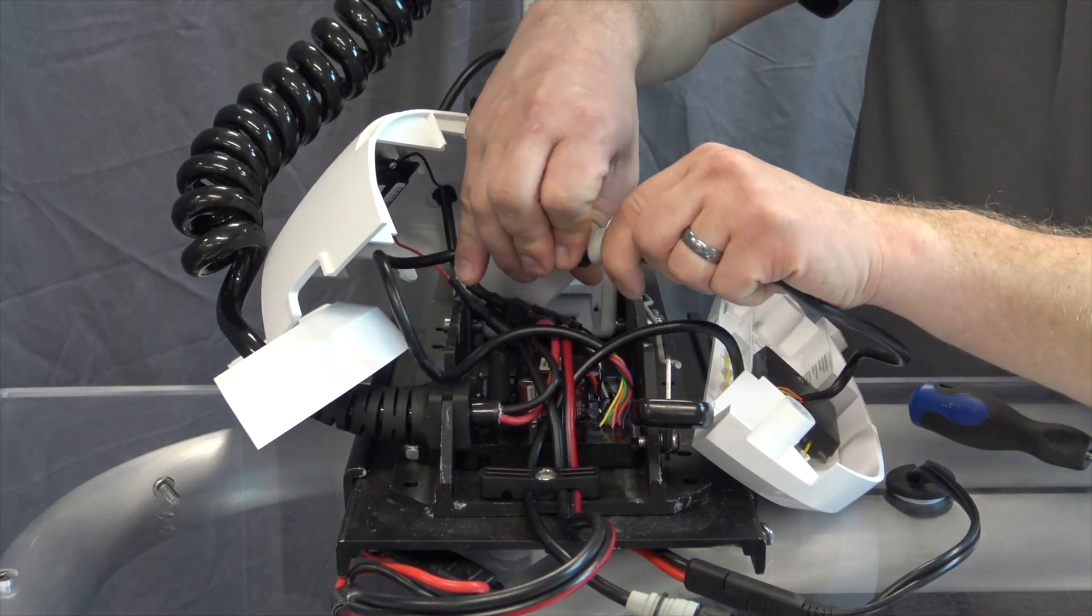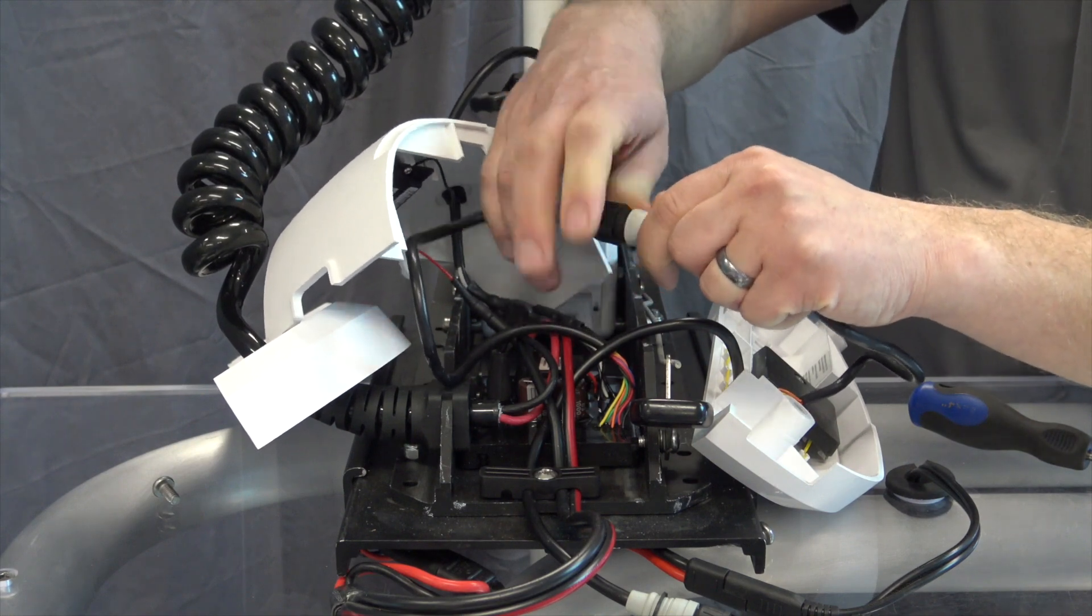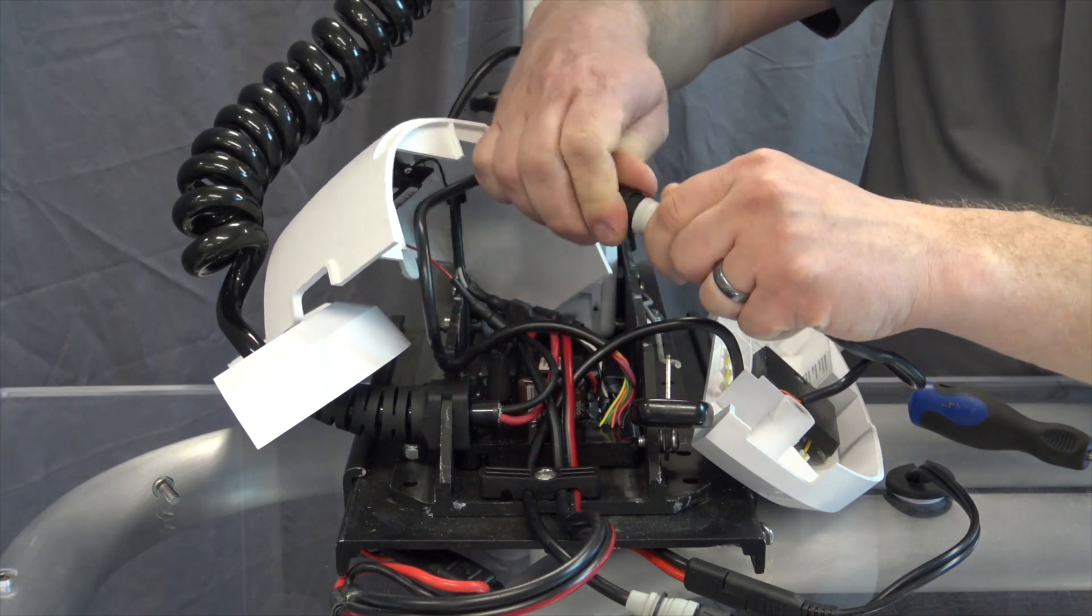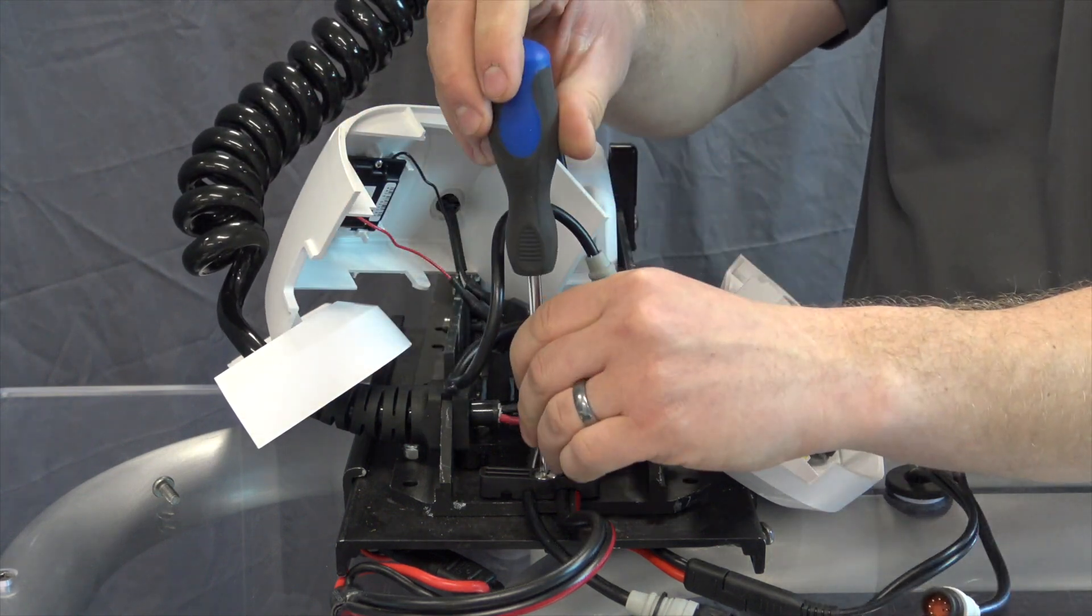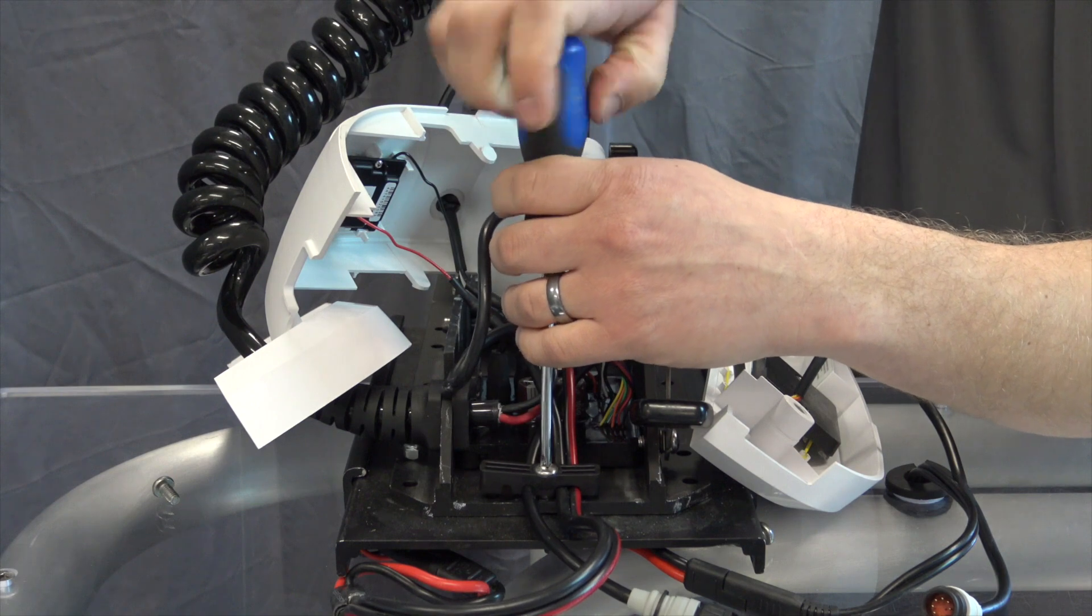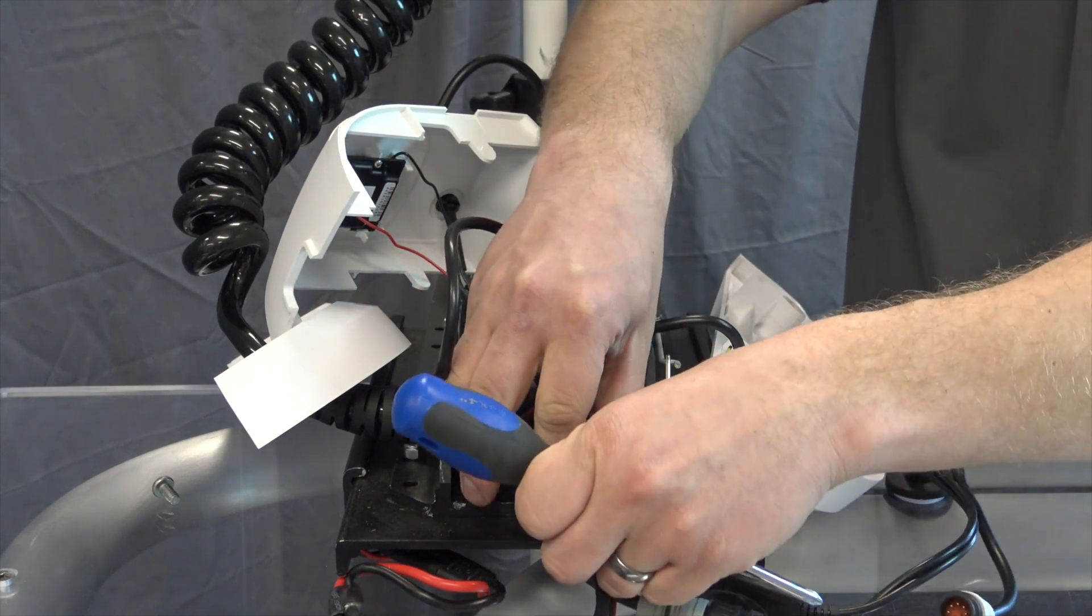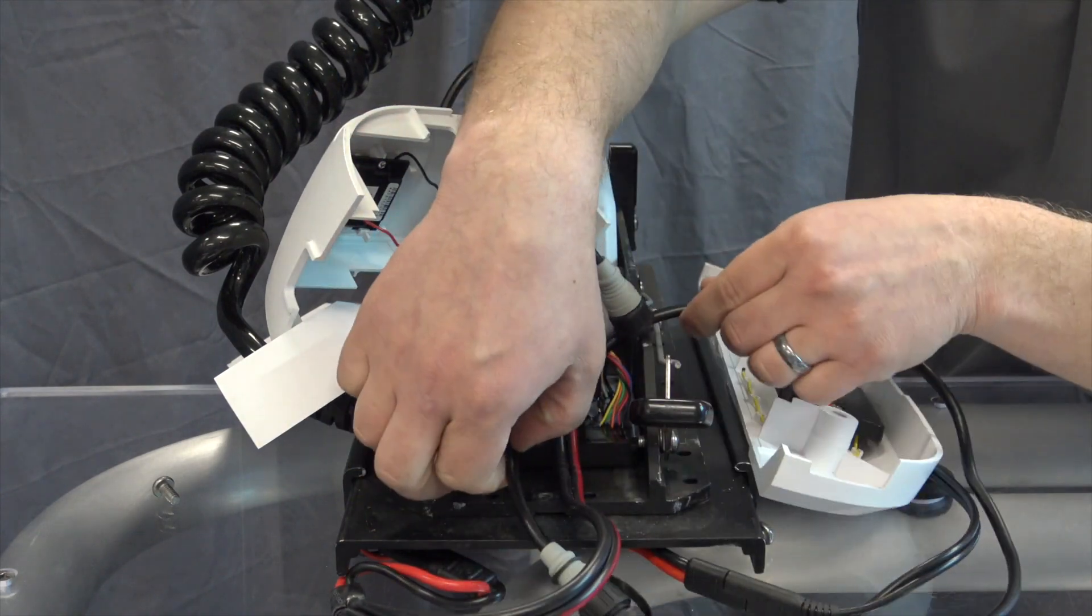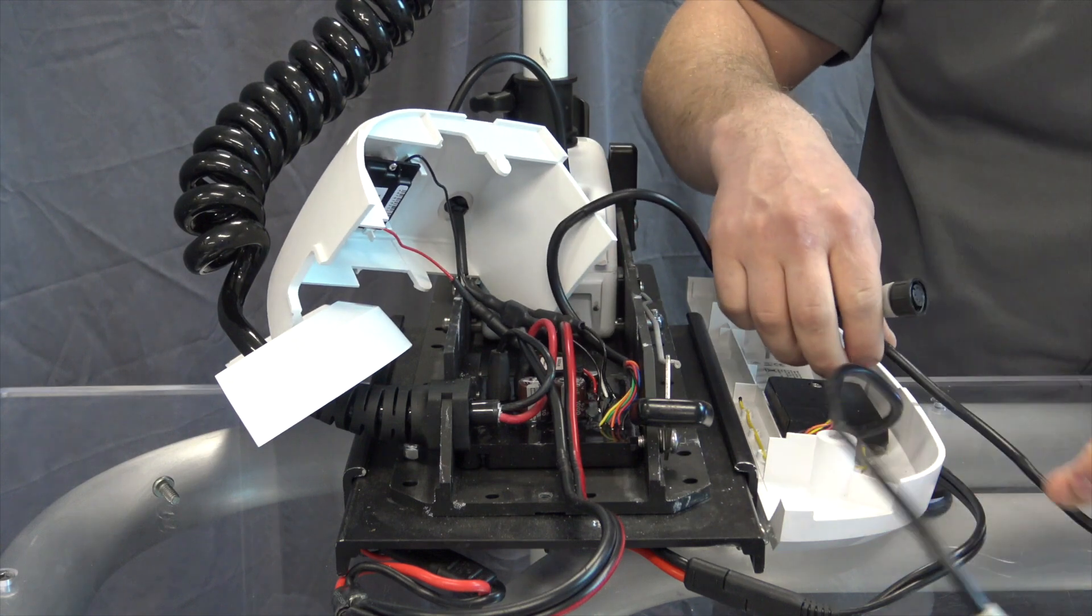First, we remove the connector that is currently connected into the Co-Pilot. Then, using our screwdriver, we remove the clamp, set that aside, and pull our connector back out.